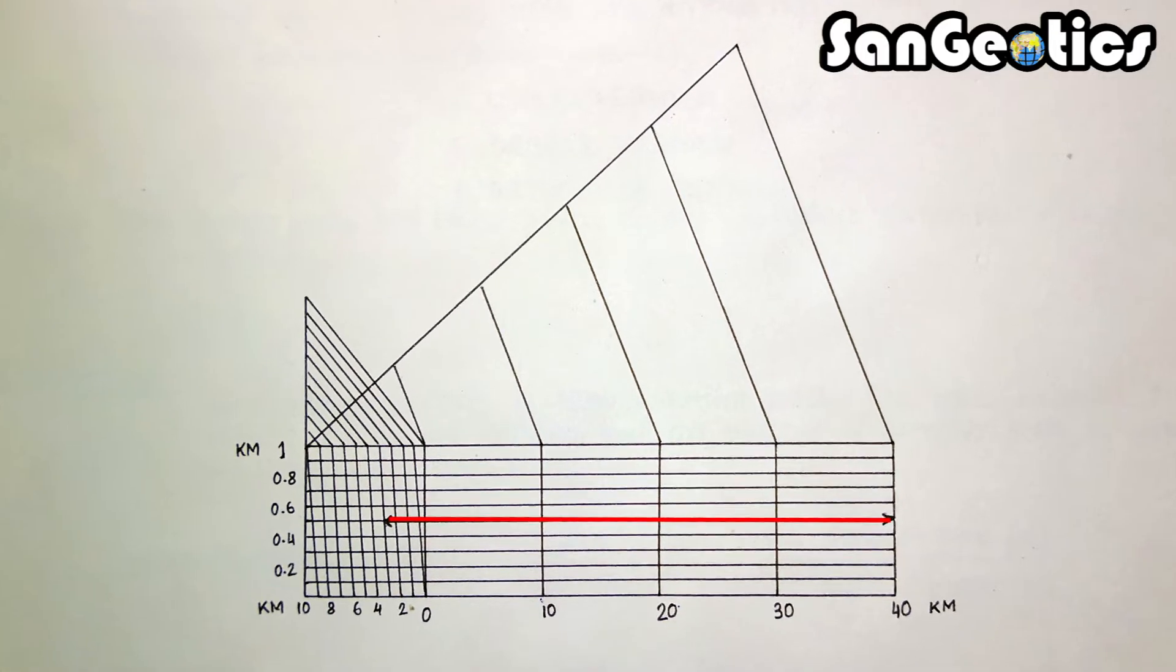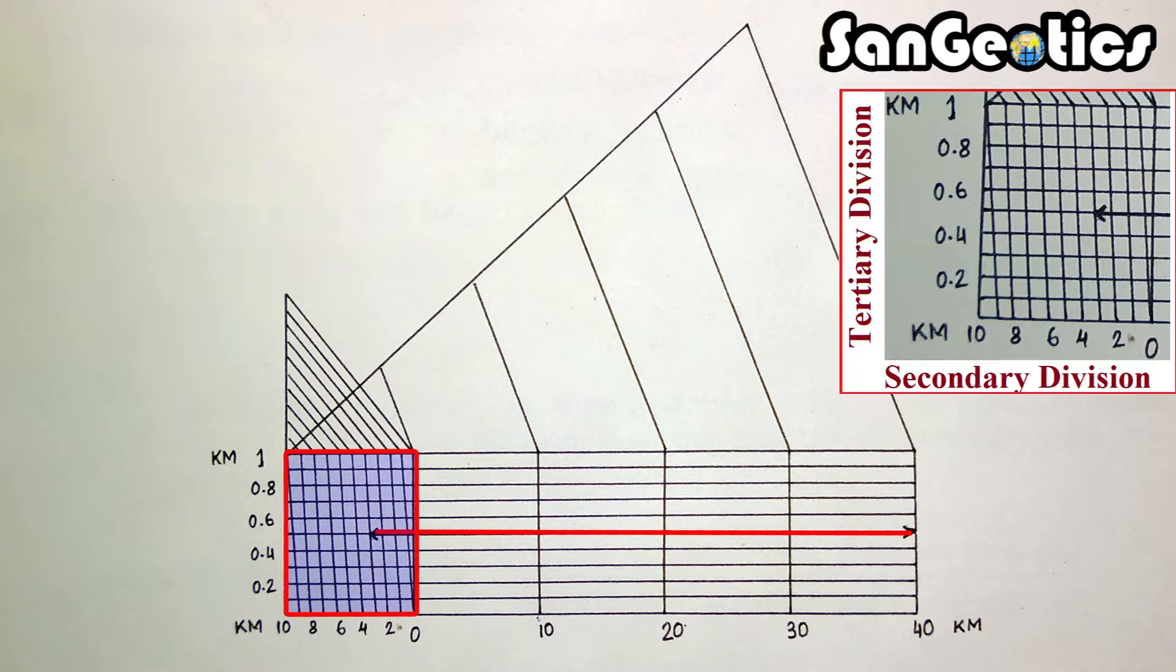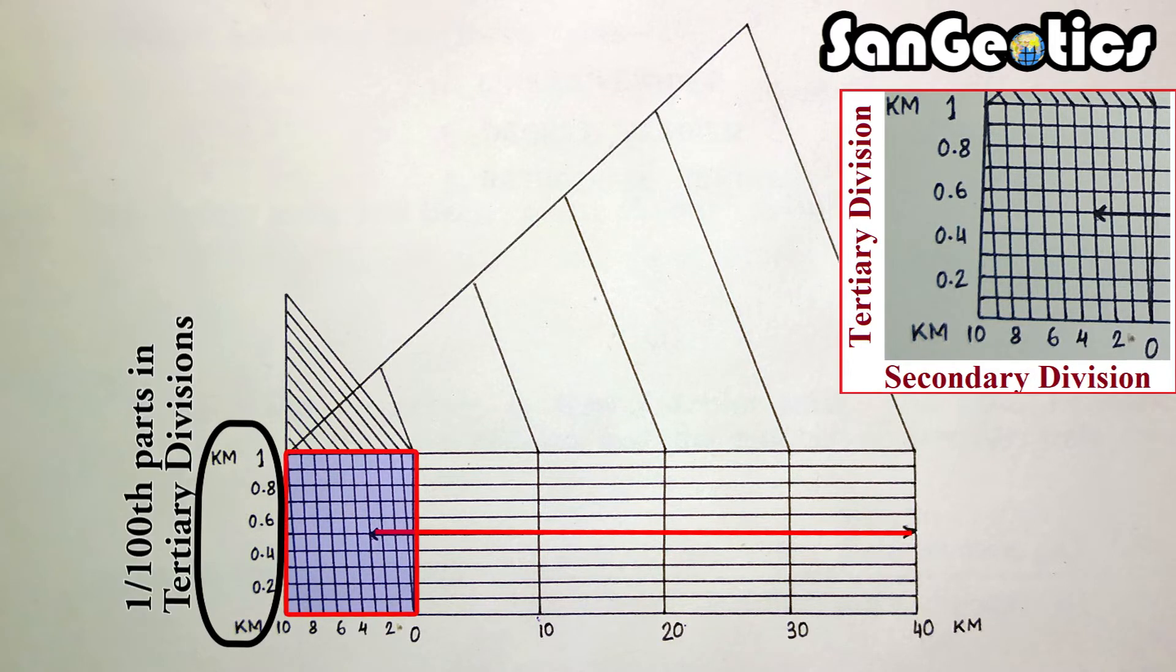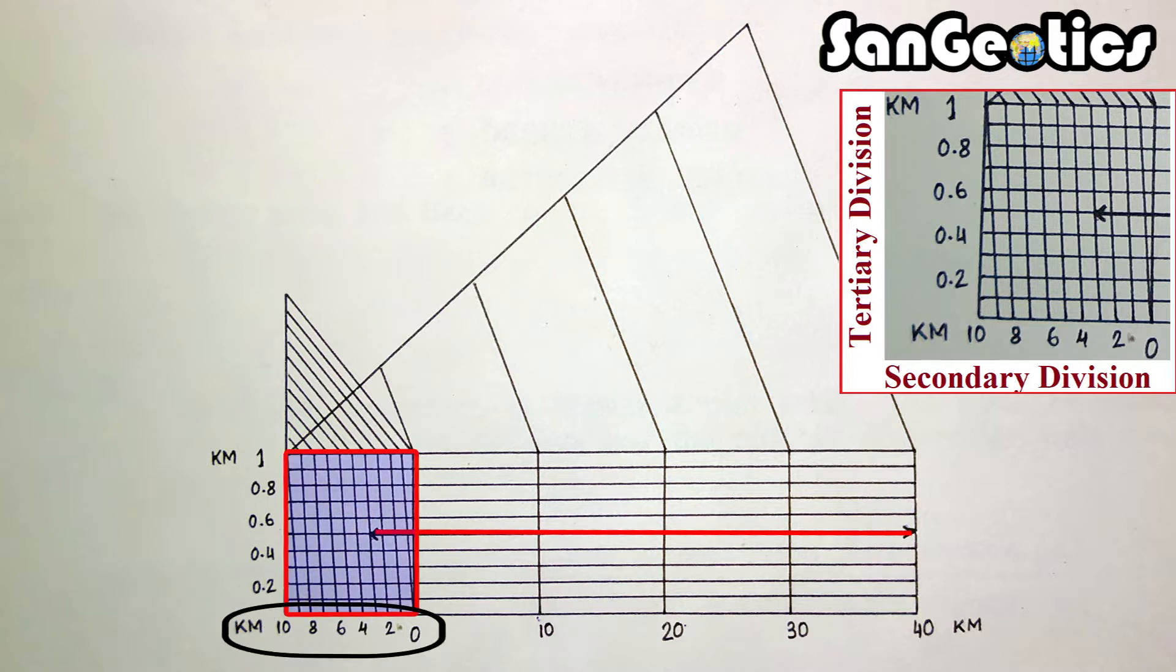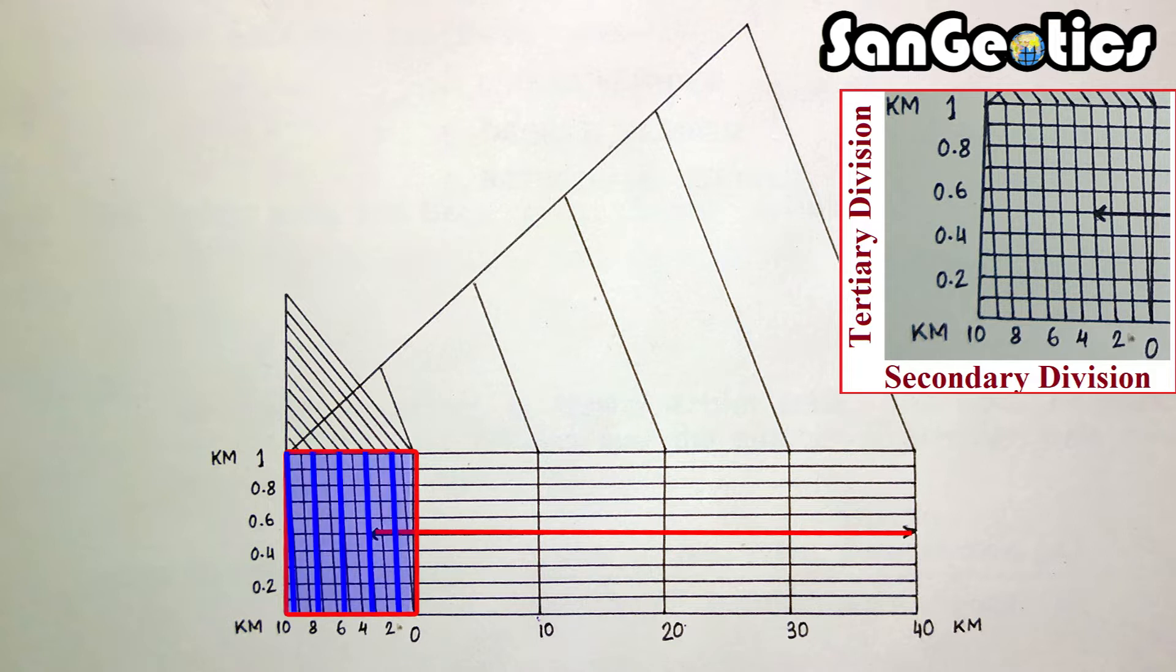Diagonal scale is a type of graphical scale which consists of primary, secondary and tertiary division. In this scale, one primary division is divided into 1 by 100 parts in tertiary divisions and 1 by 10 parts in secondary division. The tertiary division's measurement is marked along the diagonal of secondary divisions.